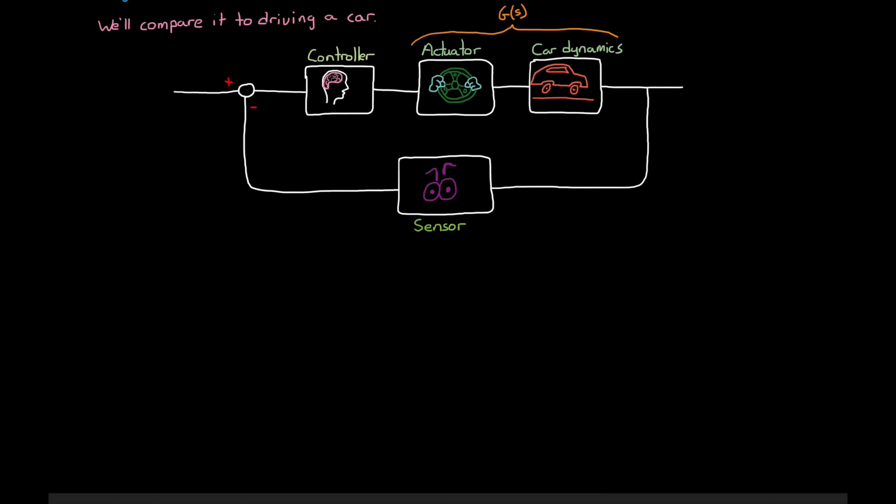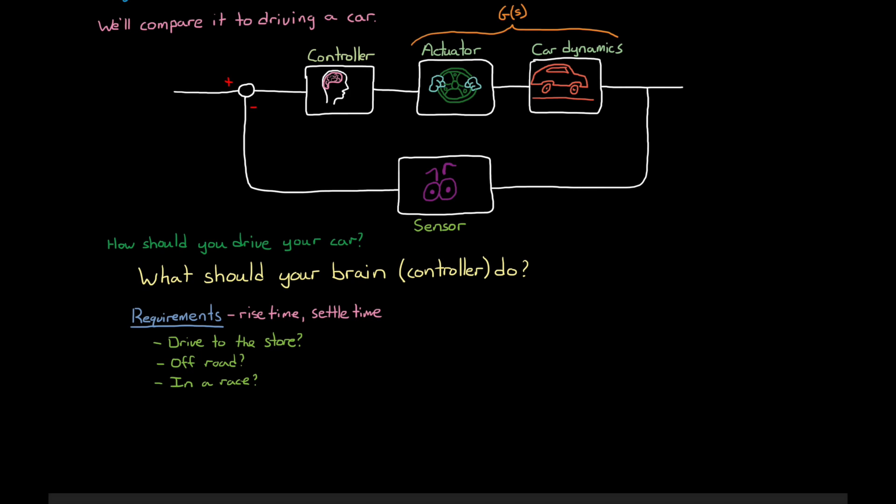And now that we have our block diagram set up, we can compare this to how you would go about designing a controller, which in this case is thinking about how to drive the car, or what should your brain do. Well, there are requirements. You got into this car for a reason. And with frequency response methods, you mostly think about requirements like rise time and settle time. However, for this example, I want to be more general. Are you driving to the store? Then maybe you want to drive it leisurely with easy turns and slow acceleration. Are you driving off-road? Then maybe you want to limit your speed. Are you in a race? Then you should accelerate hard and turn hard.